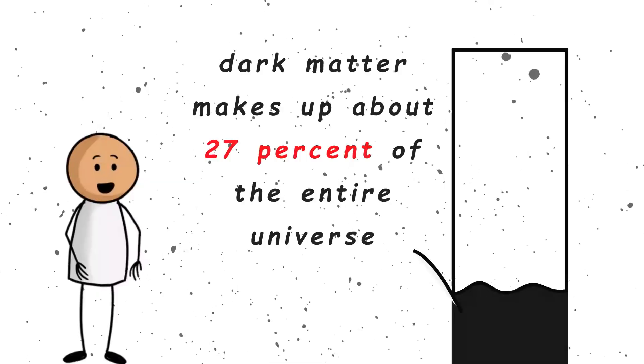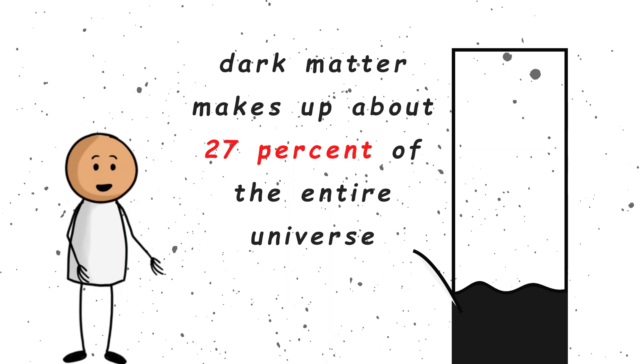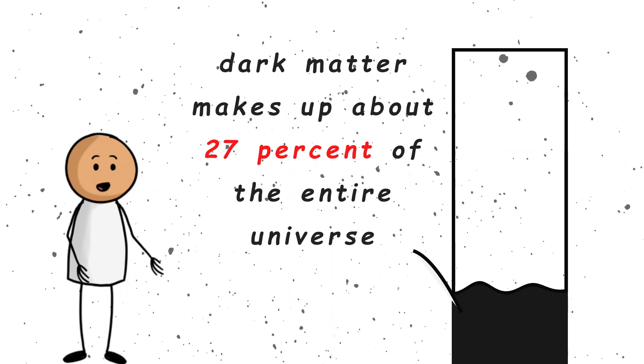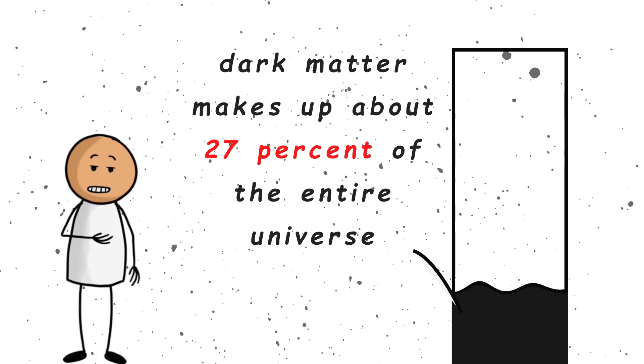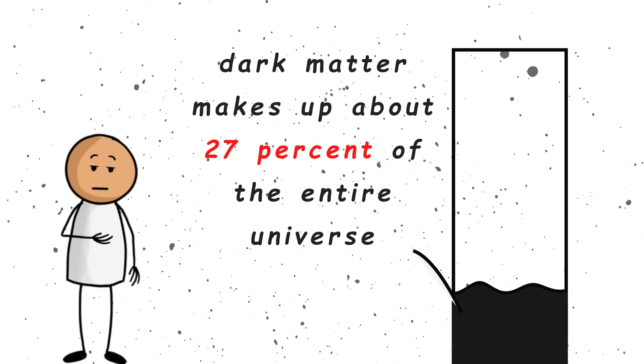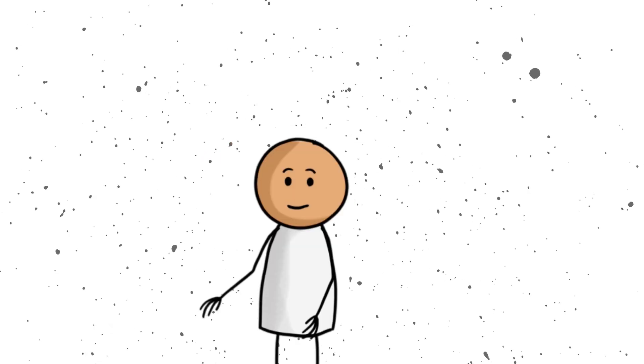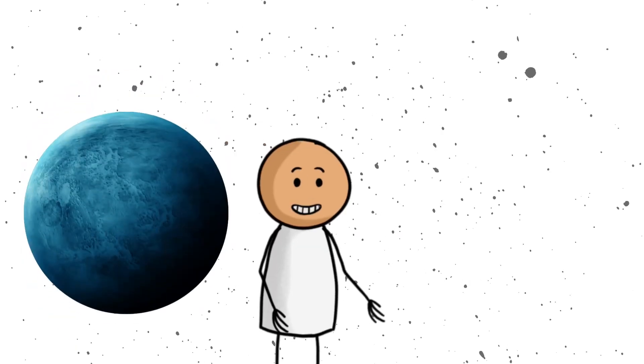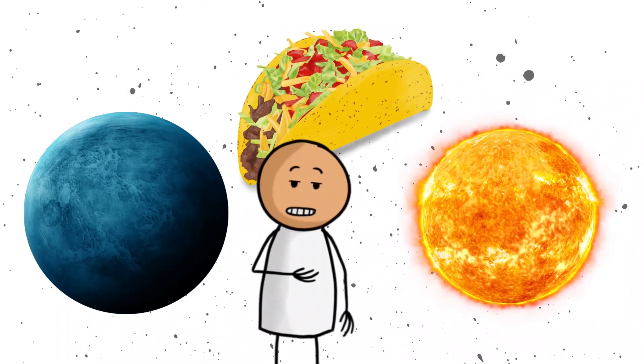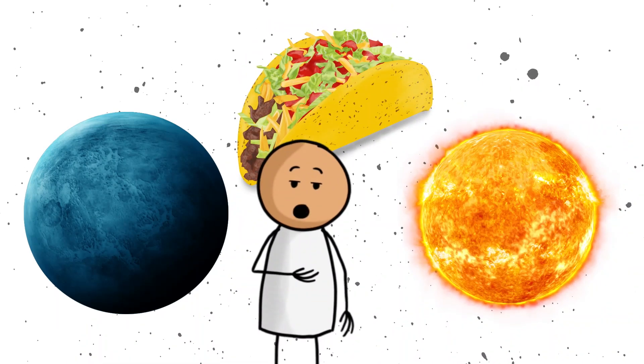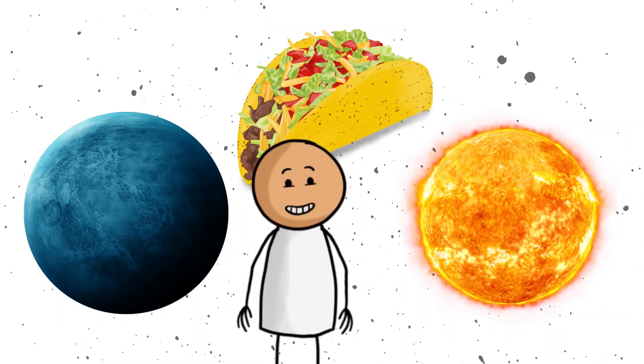Here is the wild part. Scientists believe that dark matter makes up about 27% of the entire universe. That is more than 5 times the amount of regular matter. You know, the stuff we are made of. So technically, everything we see, like planets, stars, tacos, and your favorite pet rock, only makes up about 5% of what is actually out there.